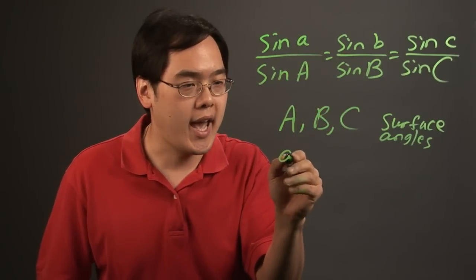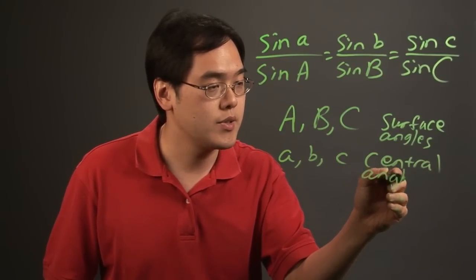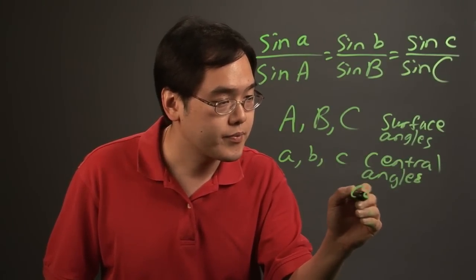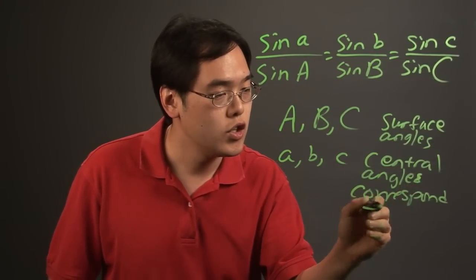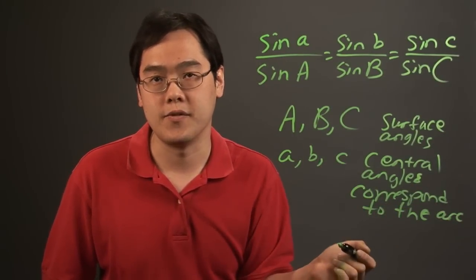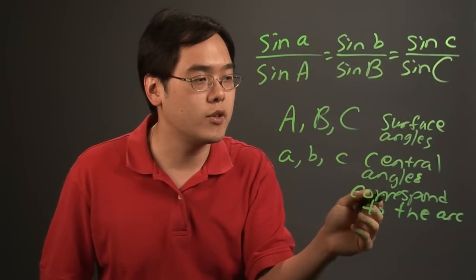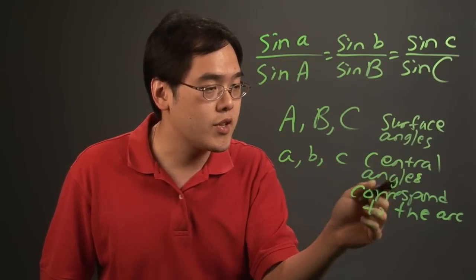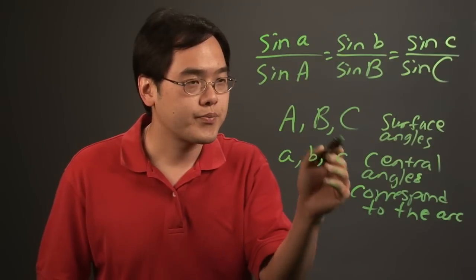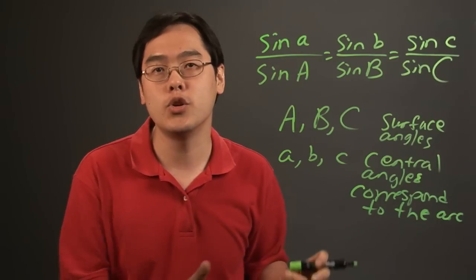In terms of lowercase a, lowercase b, and lowercase c, these correspond to the central angles of the sphere, which correspond to the arcs. If you think about the arcs of the sphere, we're talking about the lengths of those. So the sine of little a, sine of little b, and sine of little c — where little a, b, and c are the central angles — you're actually talking about the lengths of those particular sides. So there are some parallels, but the notation here is a little bit different because you are adjusting the formula to the spherical triangle.